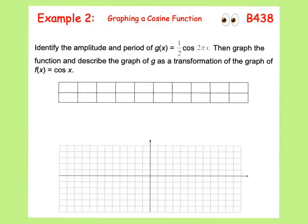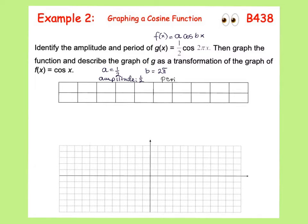In graphing a cosine function we are going to follow through with the same pattern. The cosine function in general form is the amplitude times cosine of bx, so a is equal to one-half and b is equal to two pi. We know that the amplitude is one-half and the period is calculated as two pi divided by b. Since our b is two pi, two pi divided by two pi gives us one, so the period is going to be one unit.